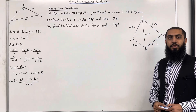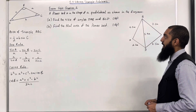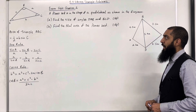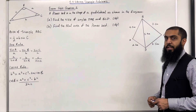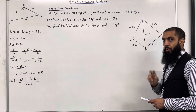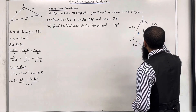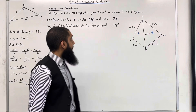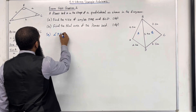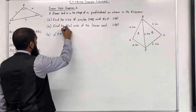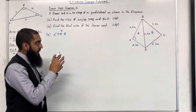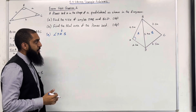Moving on to exam-style question 2. A flower bed is in the shape of a quadrilateral as shown in the diagram. Part A: find the size of angles DAB and BCD, rounding answers to one decimal place. I'm going to start by splitting this quadrilateral into two triangles — triangle A and triangle B. We want to find angle DAB first, looking at the middle letter A, so we're calculating that angle. We are given three sides of the triangle, so we'll use the cosine rule.